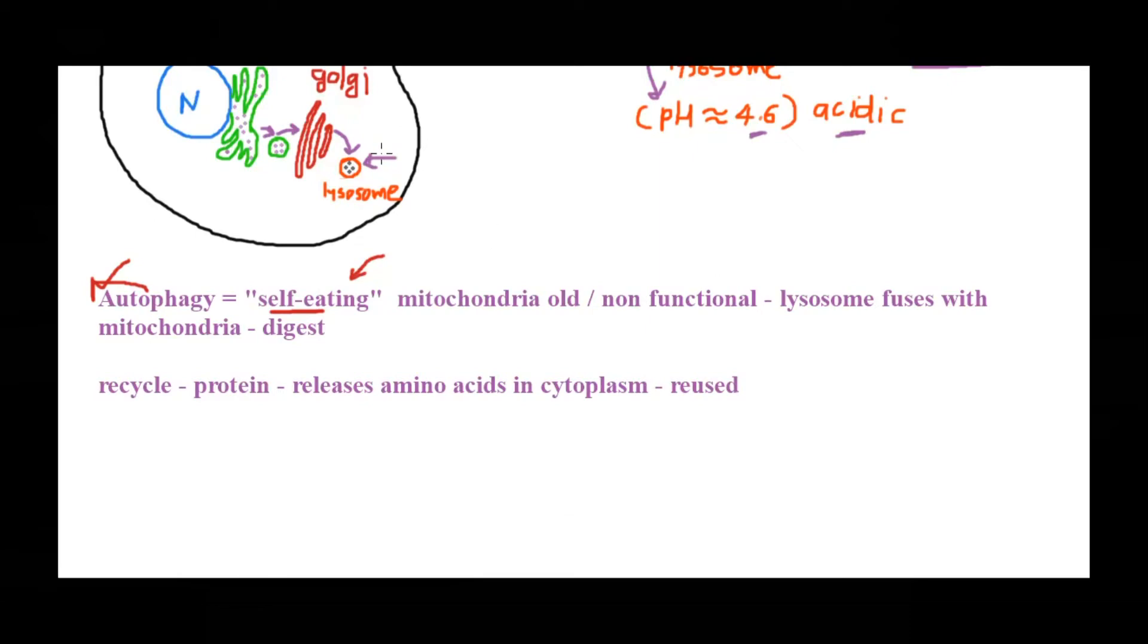If, for example, there is a mitochondria that is really old and not functioning properly, it needs to be removed from the cell and digested. What happens is the lysosomes would fuse with such mitochondria. I'm sorry, I'm not that good with diagrams. So this lysosome would fuse with this mitochondria and the enzymes would digest this mitochondria and break it down into smaller pieces.